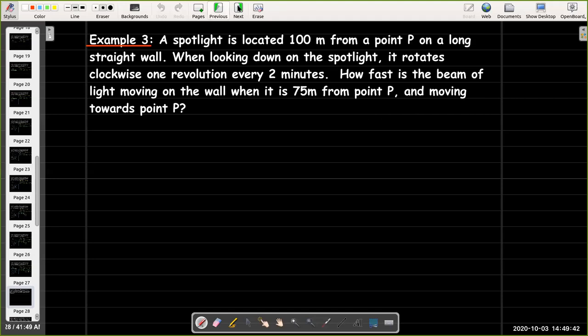So, we really need a diagram to put all that information together. And, so, we have this long wall, the spotlight is located 100 meters away, and that point right there is point P. And, in this question, we're looking at the situation where the beam of light is on this side of P, and it's moving towards P.